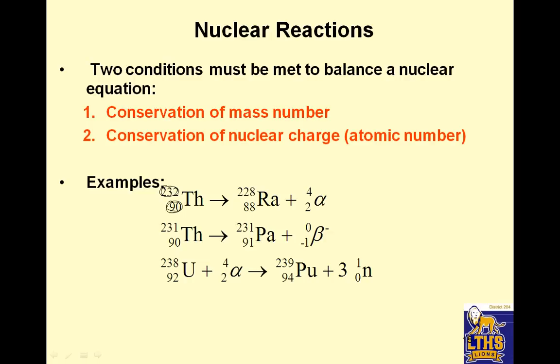So, for example, if I have thorium-232, and it turns into radium-228 and an alpha particle, notice how 228 plus 4 equals 232. 88 plus 2 equals 90.